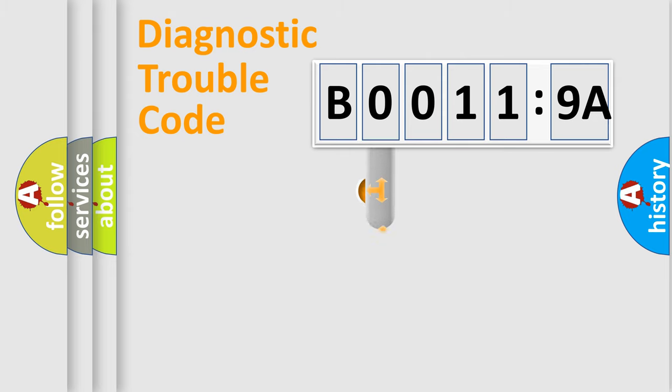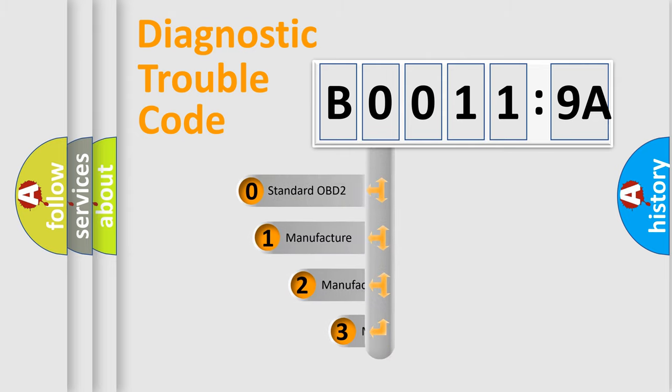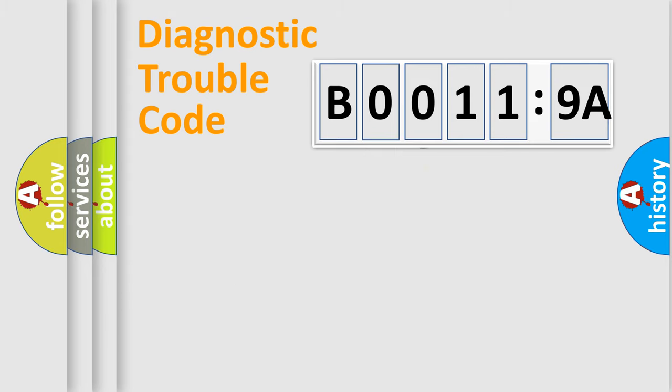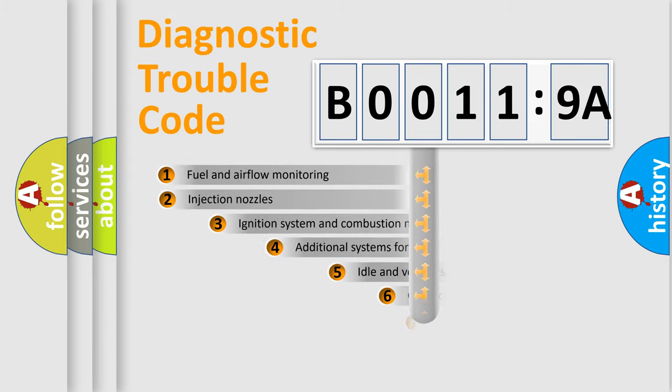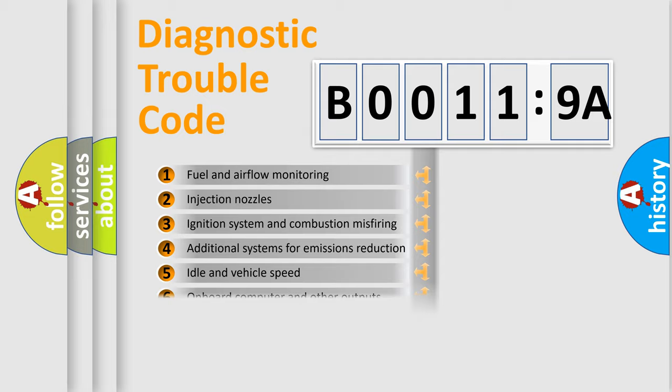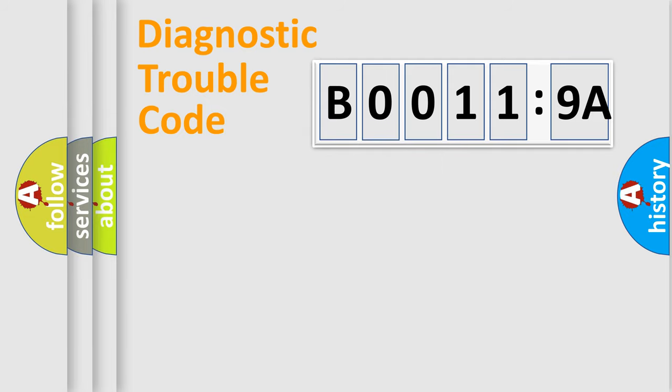This distribution is defined in the first character code. If the second character is expressed as zero, it is a standardized error. In the case of numbers 1, 2, 3, it is a manufacturer-specific error expression. The third character specifies a subset of errors. The distribution shown is valid only for the standardized DTC code. Only the last two characters define the specific fault of the group.